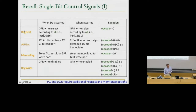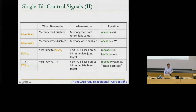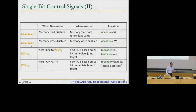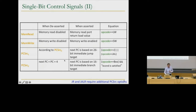These are single-bit control signals. PC source one and PC source two together control the four-to-one MUX. For example, the MemWrite control signal should be set if the opcode is store word, otherwise it should be disabled. MemRead is exactly opposite — if the opcode is load word, memory should be set, and otherwise it should be disabled. So basically you go through every single instruction and decide how these signals should be set, and now you have the control logic.